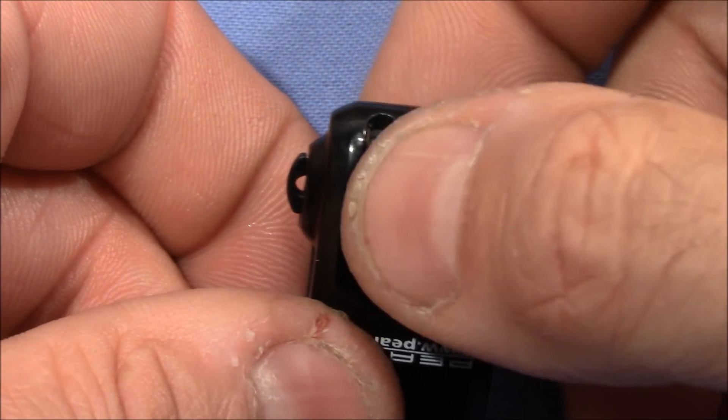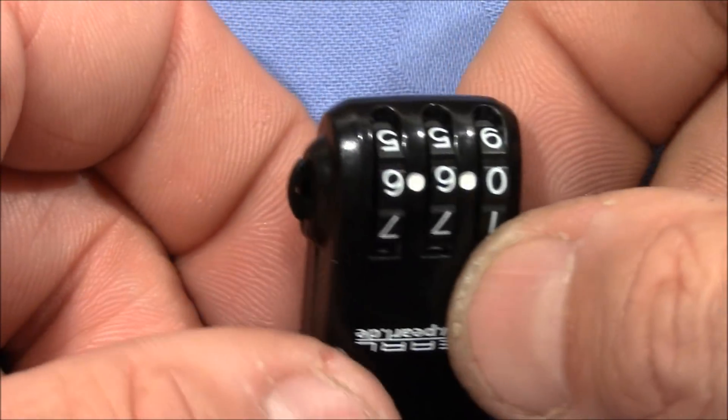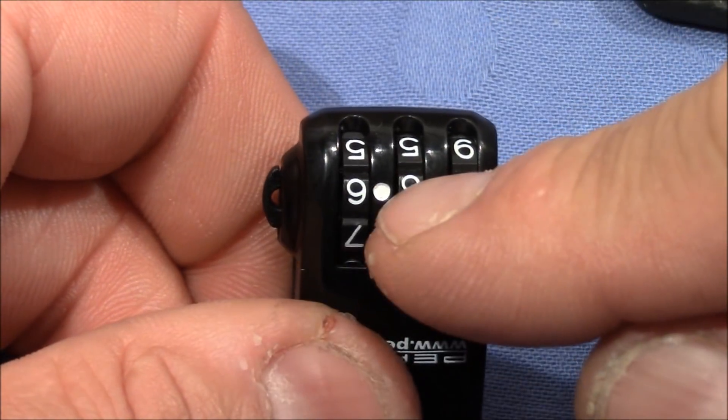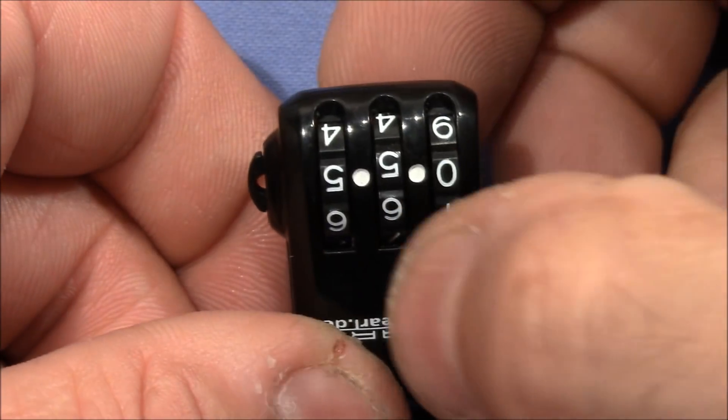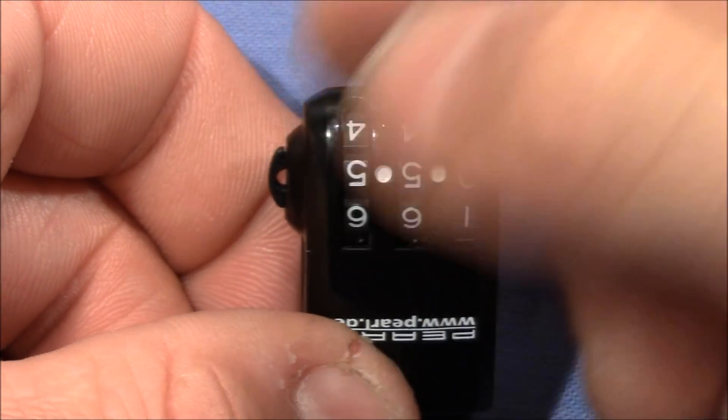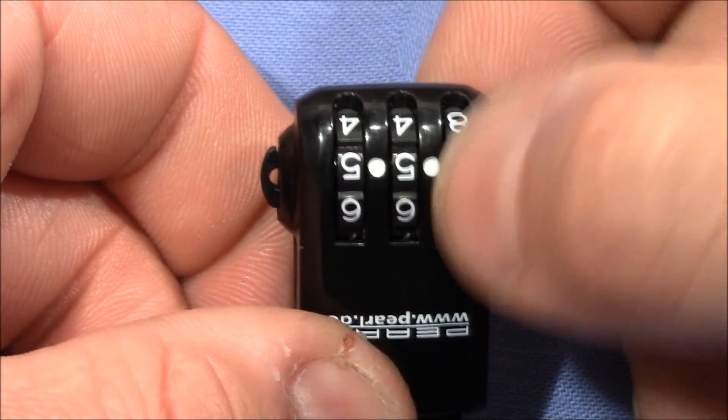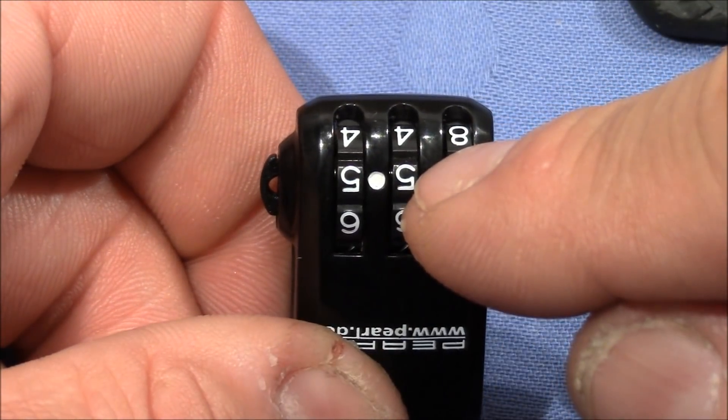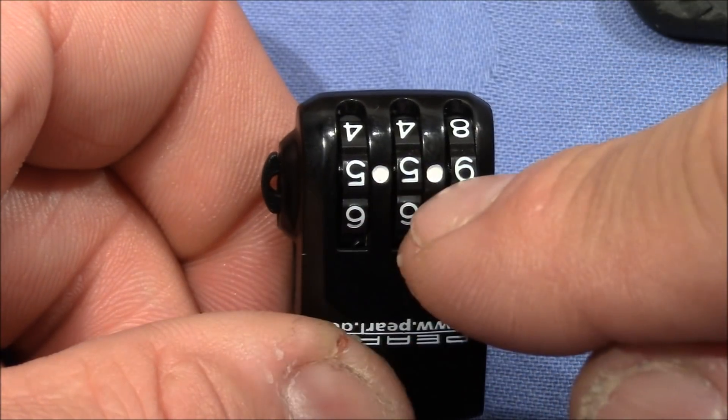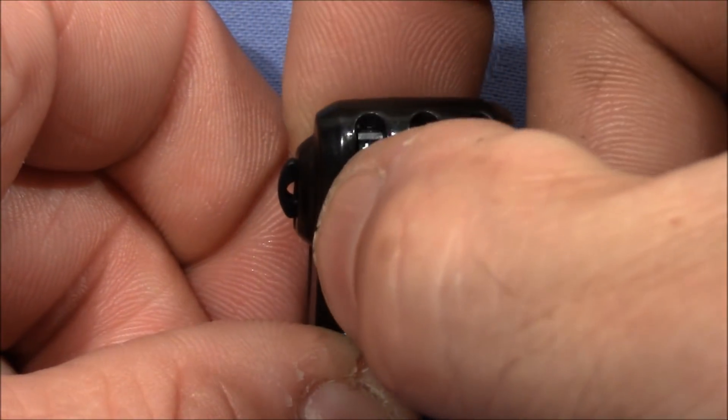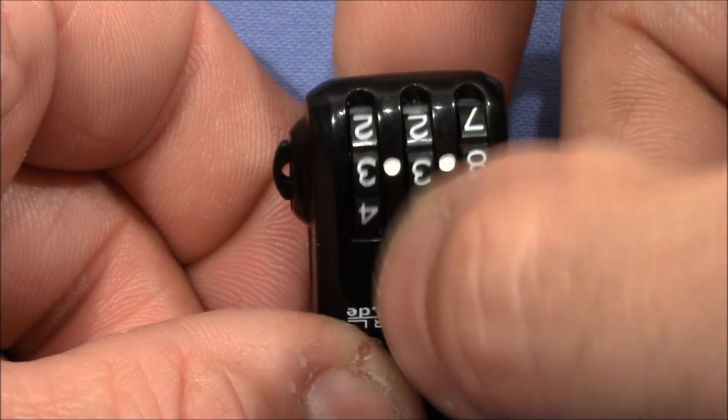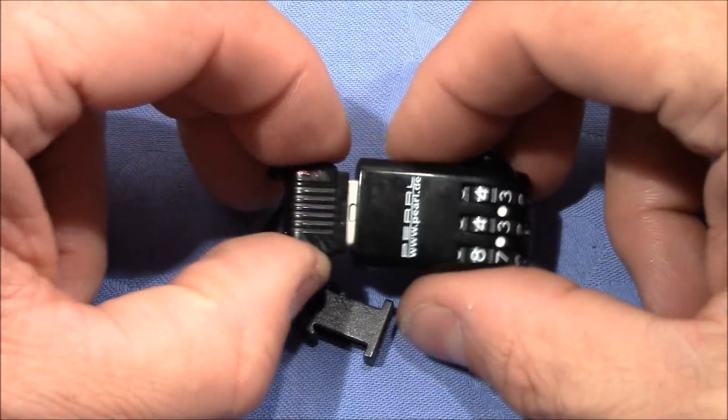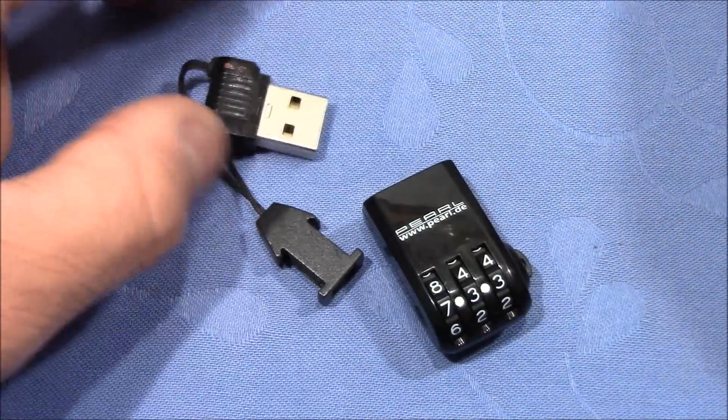We need to turn all the wheels consistently by one number at a time, and so the next test number would be 5-5-9, then 4-4-8, then 3-3-7. And you heard it—it just opened right away. So this lock is not bad.